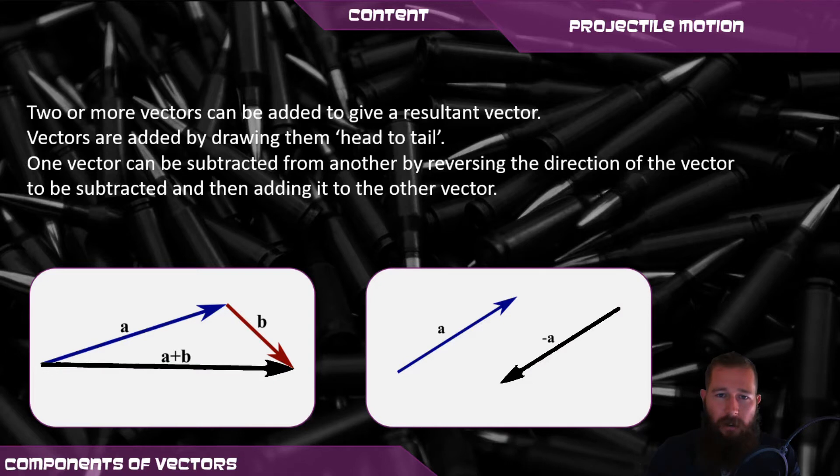Now if we have to subtract a vector, it's the negative of the vector, and what that means is we just flip the direction of the vector, put the arrow on the other side.